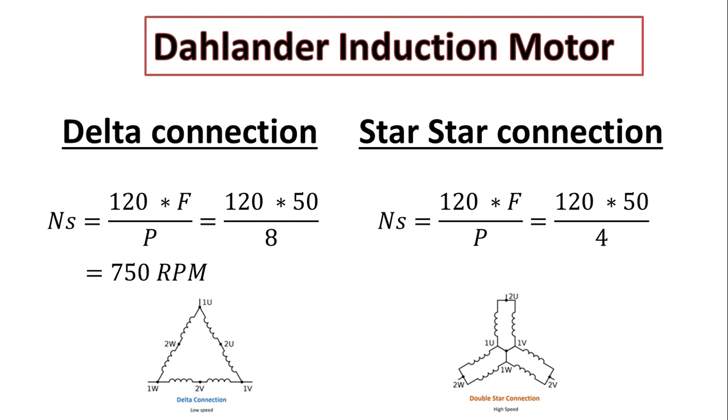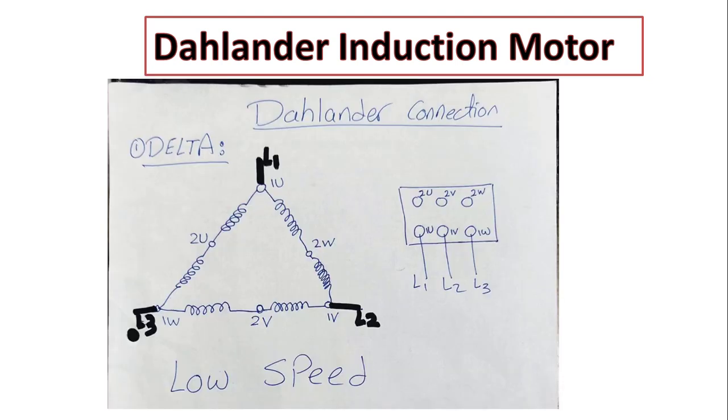So the synchronous speed will equal to 1500 RPM. Perfect. Now let's see how to connect the motor as star-star or delta. At first, if we connect it as delta, we will get the low speed because we will get here eight poles.